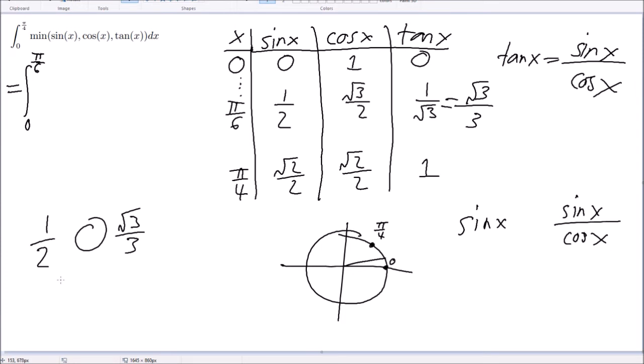Half or root 3 over 3? Multiply 6 to both sides, I get 3, 2 root 3. Square both sides, I get 9. 4 times 3 is 12. Oh, shoot, so this is bigger. Okay, so sine of x here is the smallest.